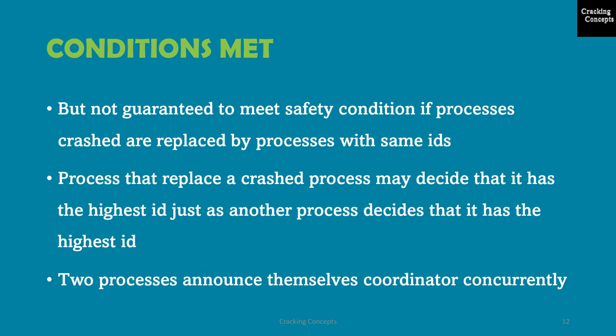However, the algorithm is not guaranteed to meet the safety condition if crashed processes are replaced by processes with the same identifiers. A replacement process may decide it has the highest identifier, just like any other process that detected the crash, and also declare itself coordinator — so two processes may announce themselves as coordinator concurrently. Unfortunately, there are no guarantees on message delivery order, and recipients may reach different conclusions on which is the coordinator. Furthermore, the safety condition may be broken if assumed timeout values are inaccurate, that is, if the process failure detector is unreliable.